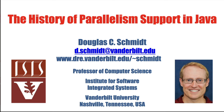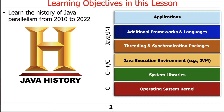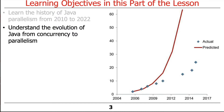Now that you know about some common mechanisms Java provides for parallel programming, let's talk about the history of parallelism support in Java over the past decade or so — roughly from 2010 to today. We'll also discuss the evolution of Java from its initial focus on concurrent programming, beginning in the spring of 1995, to more parallel programming, which is what we have today, and why that transition has taken place.